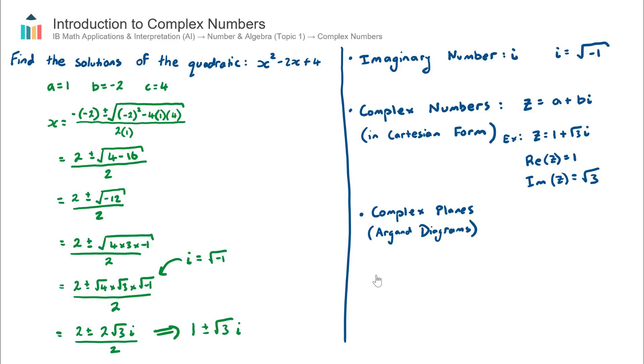Okay, so a complex plane has a horizontal and vertical axis but it's no longer an x and y axis - it's actually a real axis (which is the horizontal) and an imaginary axis. So this here is our complex plane.